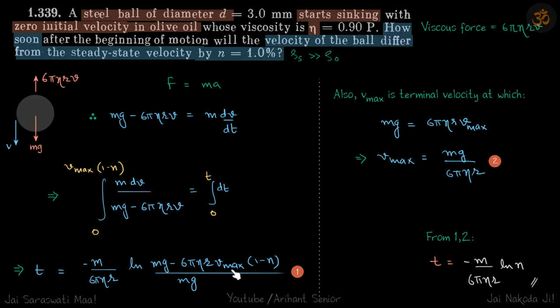We put that vmax here and you will see all these terms inside ln will get cancelled and you will get a simplified value of ln n. And hence our answer t will be minus m by 6πηR ln n.